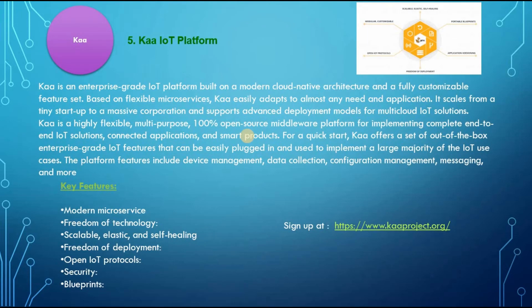The final one is Ka-IoT platform. Ka is an enterprise-grade IoT platform built on a modern cloud-native architecture and a fully customizable feature set. Based on flexible microservices, Ka easily adapts to almost any need and application. It scales from a tiny startup to a massive corporation and supports advanced deployment models for multi-cloud IoT solutions. The platform features include device management, data collection, configuration management, messaging, and more. Check out the complete details at www.kaaproject.org.